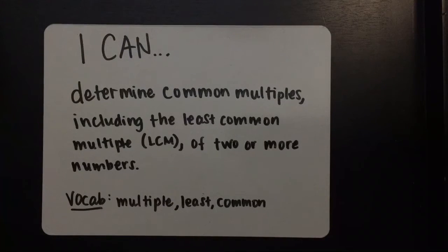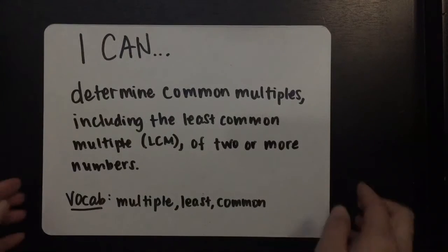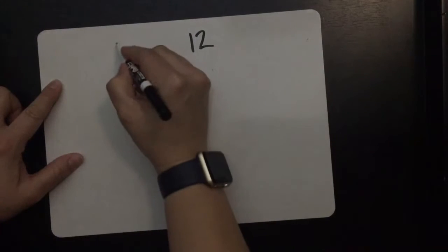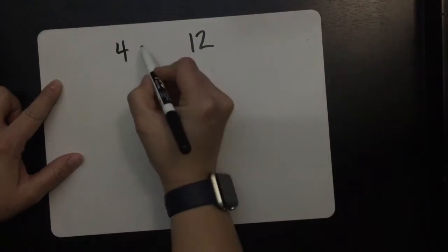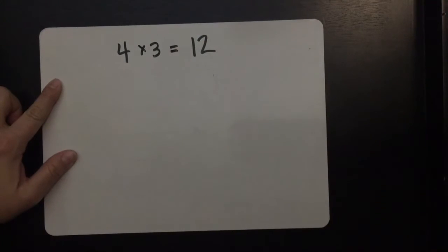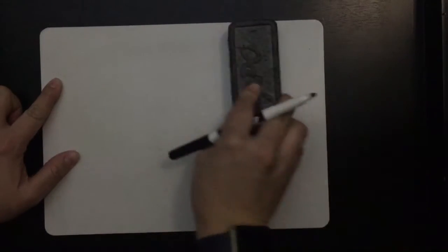The vocab that you need to know is multiple, least, and common. As a refresher, you need to know that a multiple is a number that is the product of a given number and some other number. For example, 12 is a multiple of 4 because 4 times 3 equals 12.